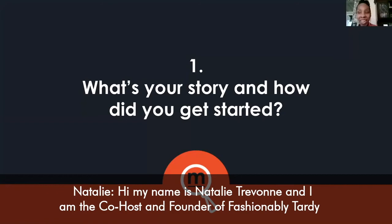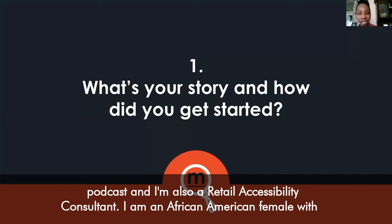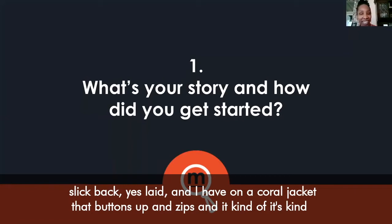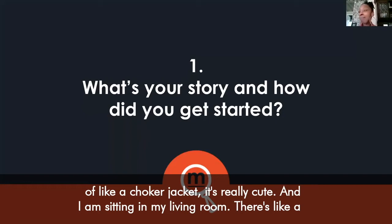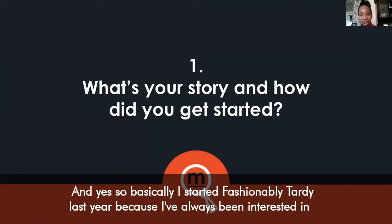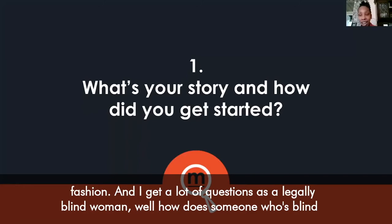Hi, my name is Natalie Trevon and I am the co-host and founder of Fashionably Tardy podcast, and I'm also a retail accessibility consultant. I am an African-American female with medium brown skin. I have blue eyes, my hair is in a high curly bun with my edges slicked back. I have on a coral jacket that buttons up and zips. I am sitting in my living room with a chest behind me with little knick-knacks. I started Fashionably Tardy last year because I've always been interested in fashion, and I get a lot of questions as a legally blind woman — how does someone who's blind like fashion? How do you dress yourself?